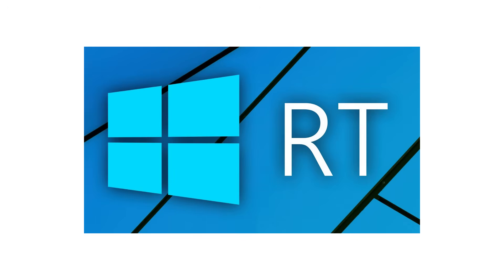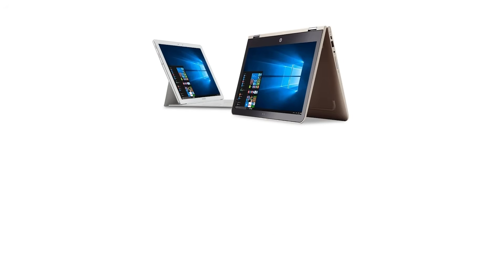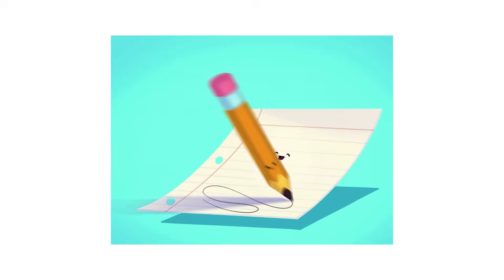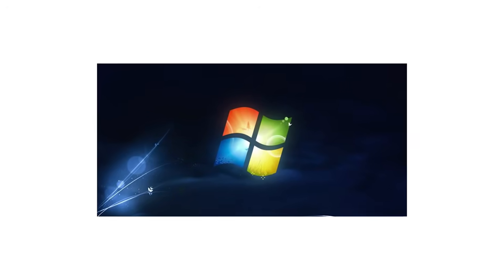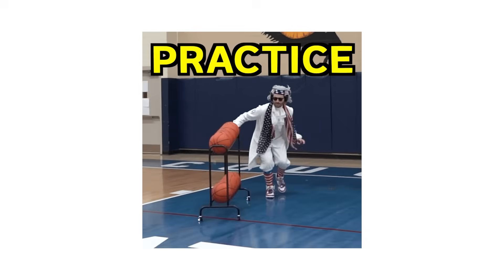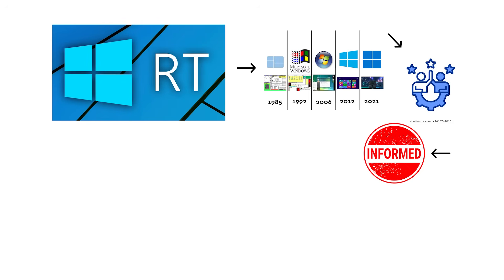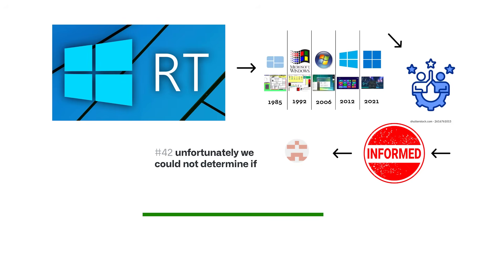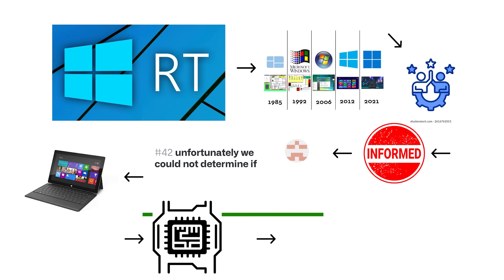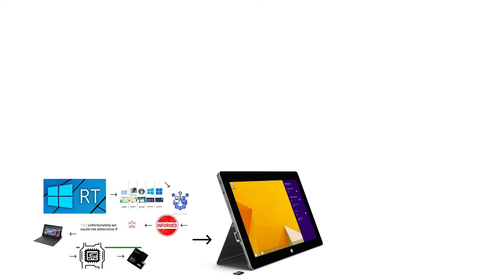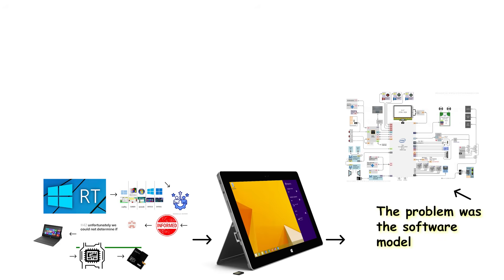Windows RT was Microsoft's attempt to bring Windows to battery-efficient ARM processors, the same type of chips used in smartphones and tablets. On paper, the idea was logical: offer a Windows-like experience on lightweight, long-lasting devices. In practice, Windows RT delivered a version of Windows that looked familiar, acted familiar, and then politely informed you that it could not actually run any of the software you expected Windows to run. The system launched alongside the first Surface tablet. The hardware was solid, the battery life was good, and the design was competitive for its time. The problem was the software model.